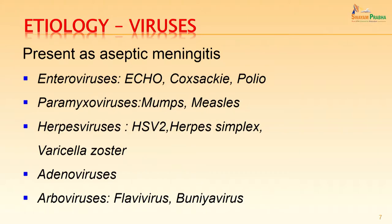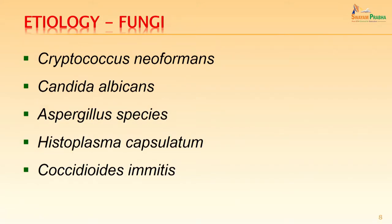Viruses usually cause a clinical presentation known as aseptic meningitis, meaning CSF is relatively clear and no inflammatory cells are seen in the cerebrospinal fluid. The common viruses causing meningitis are enteroviruses, paramyxoviruses, herpesviruses, adenoviruses and arboviruses. Fungi can cause chronic meningitis — Cryptococcus neoformans, Candida albicans and Aspergillus are the major pathogens. Parasites can also present as meningitis: Entamoeba histolytica, Naegleria, Acanthamoeba, the free-living amoeba, and sometimes Toxoplasma gondii.